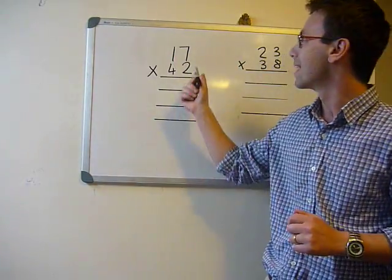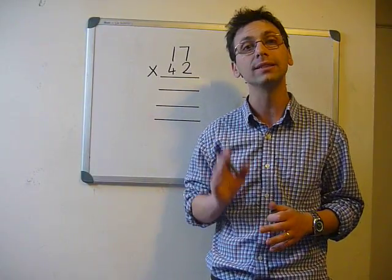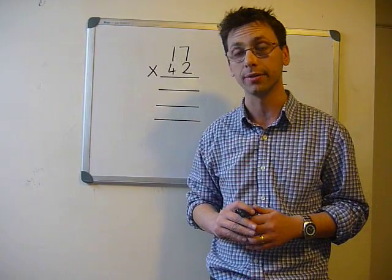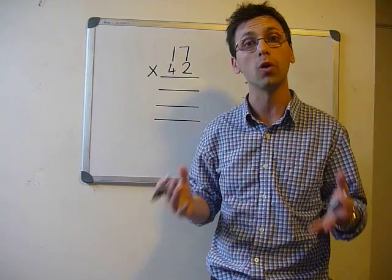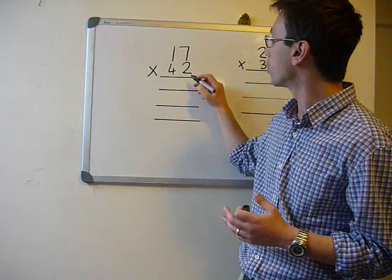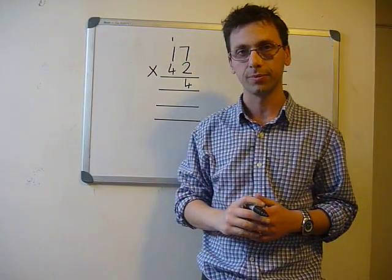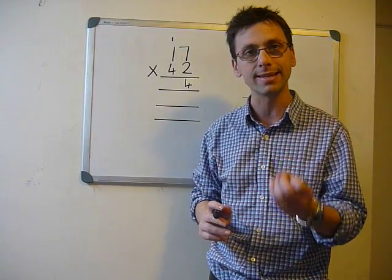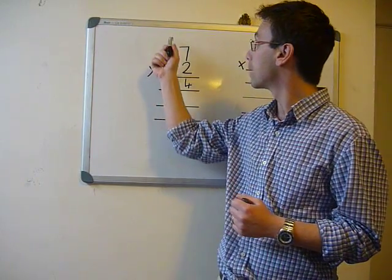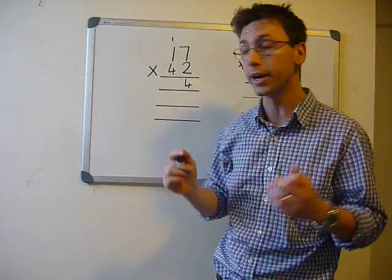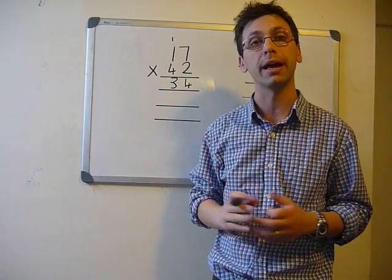Our first step, 17 times 42. Always start on the right hand side. 2 times 7 is 14. Put the 4 down and carry the 1. Starting with the same number, 2 times 1 is 2 plus the 1 equals 3, so we put the 3 down to make 34.